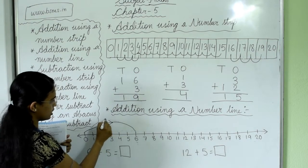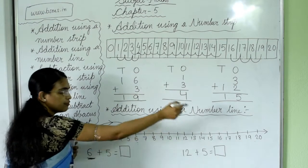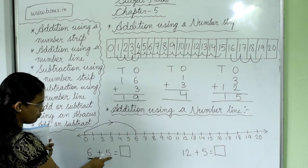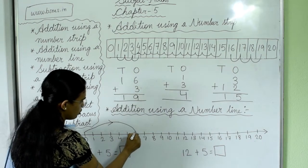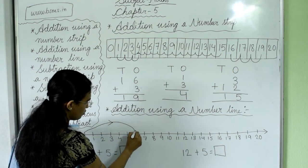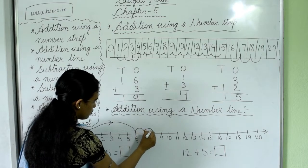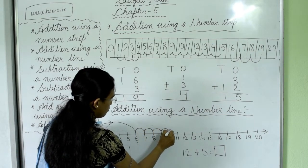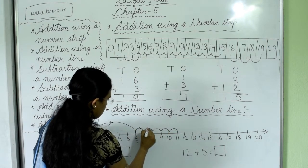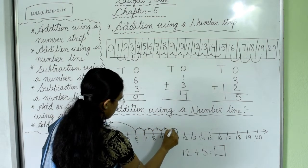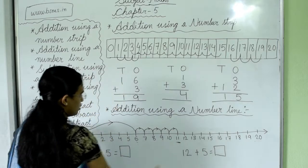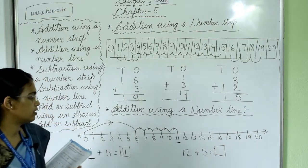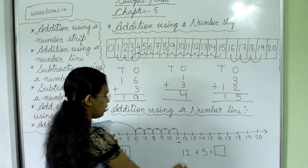From 6, we have to take 5 small steps forward: 1, 2, 3, 4, 5. We have reached number 11. So 6 plus 5 equals 11.